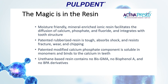The magic is in the resin. The moisture-friendly, mineral-enriched ionic resin facilitates the diffusion of calcium, phosphate, and fluoride that integrates with tooth structure. The patented rubberized resin is tough, shock-absorbing, and resists fracture, wear, and chipping. The patented modified calcium phosphate component is soluble in monomers and binds to the calcium in teeth. Urethane-based resins contain no bis-GMA, no bisphenol-A, and no BPA derivatives.